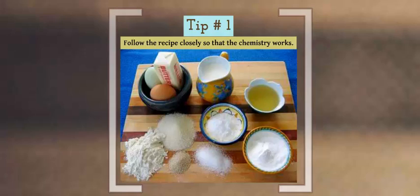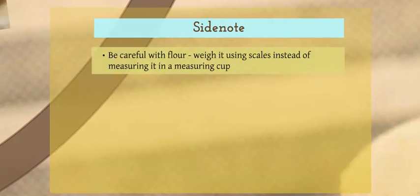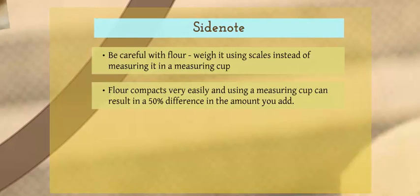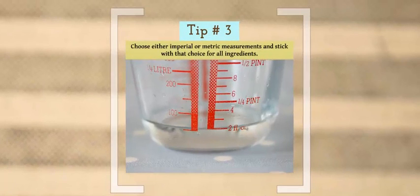The second tip is to accurately weigh and measure each ingredient. Be careful with flour - weigh it using scales instead of measuring it in a measuring cup. Flour compacts very easily and using a measuring cup can result in a 50% difference in the amount you add. Always measure small quantity ingredients with measuring spoons, as a minor variation in their amount can have a big impact on the end result.